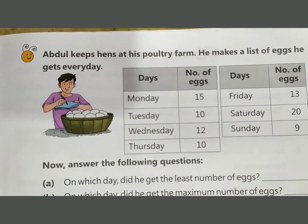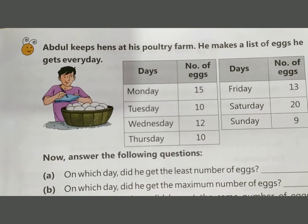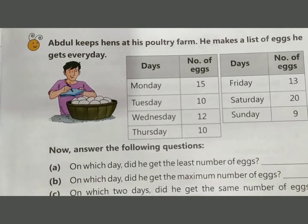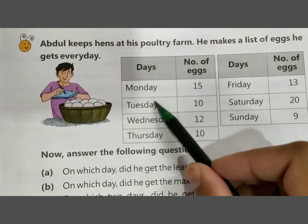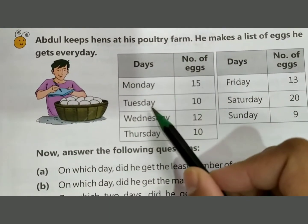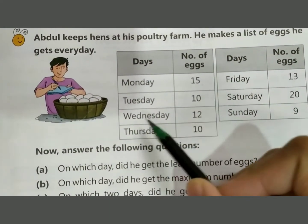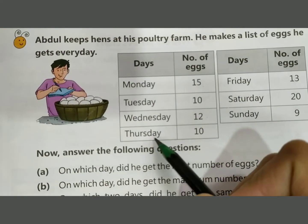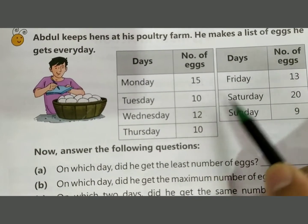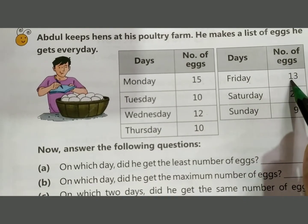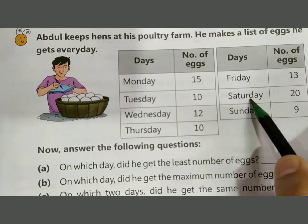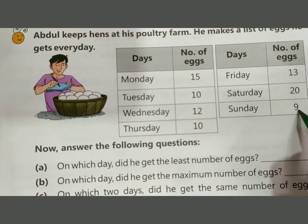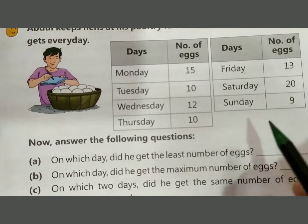Next question: Abdul keeps hens at his poultry farm. He made a list of eggs he got every day. Monday: 15, Tuesday: 10, Wednesday: 12, Thursday: 10, Friday: 13, Saturday: 20, Sunday: 9. Now answer the following questions.